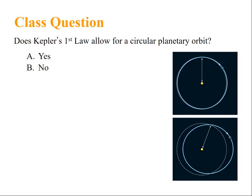Now, a class question: Does Kepler's first law allow for circular planetary orbits? Answer is yes. A circle is an ellipse with an eccentricity of zero. Most planetary orbits are very close to circular.